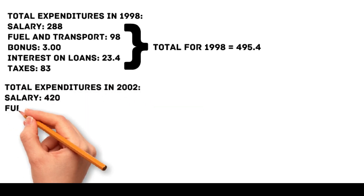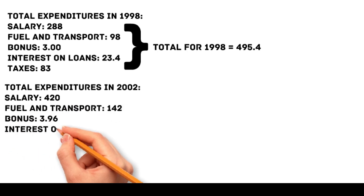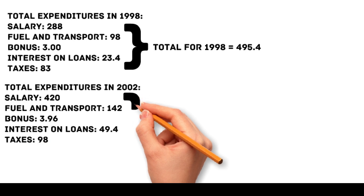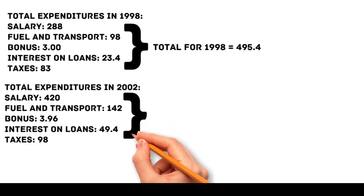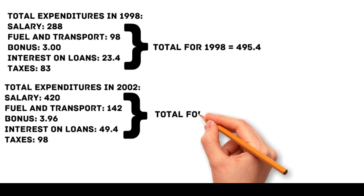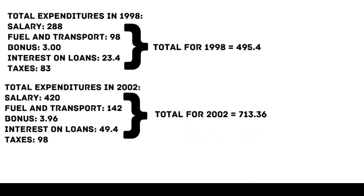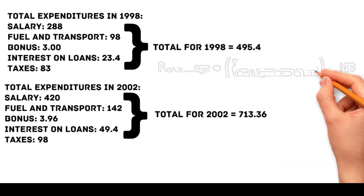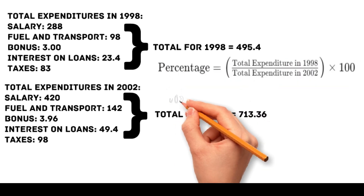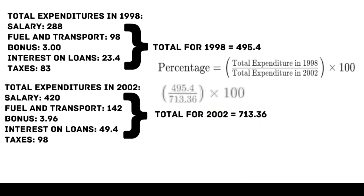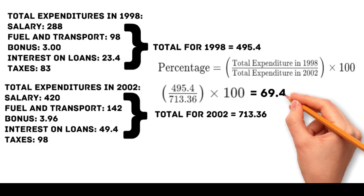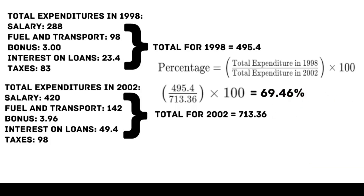Total expenditures in 2002: salary 420, fuel and transport 142, bonus 3.96, interest on loans 49.4, and taxes 98, which equals 713.36 million. The percentage calculation = 495.4 / 713.36 × 100 = 69.46%. The total expenditure in 1998 is approximately 69% of the total expenditure in 2002. The correct answer is c, 69%.